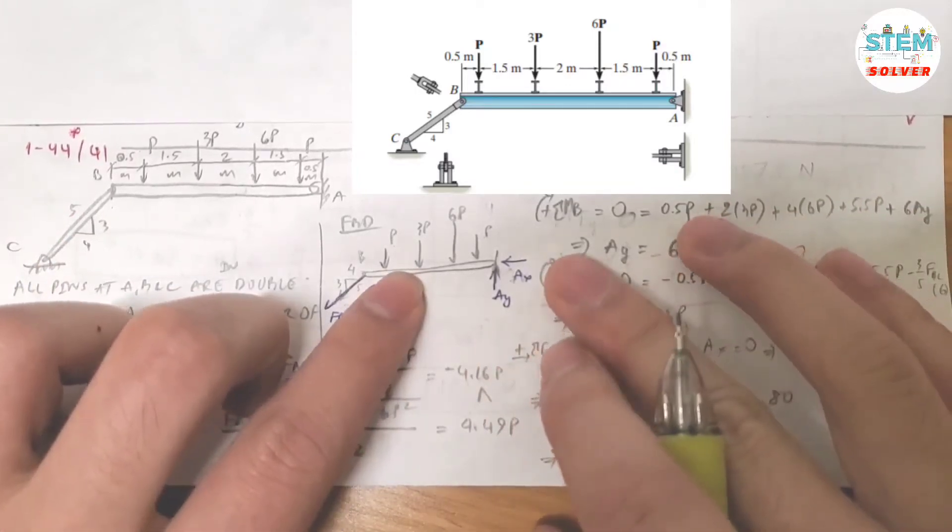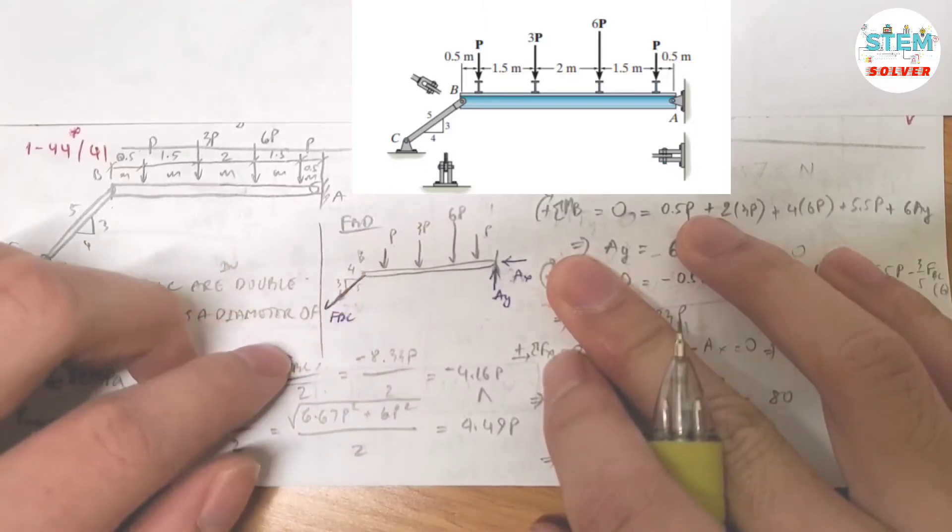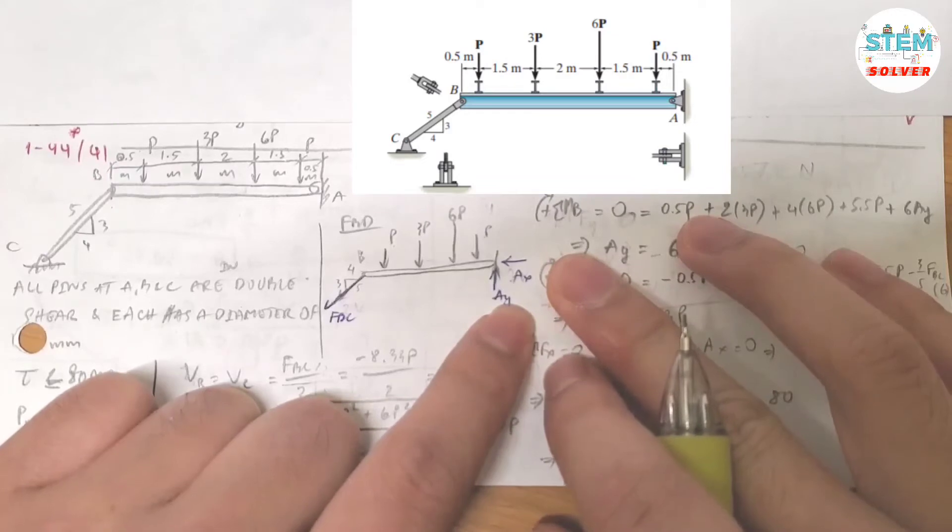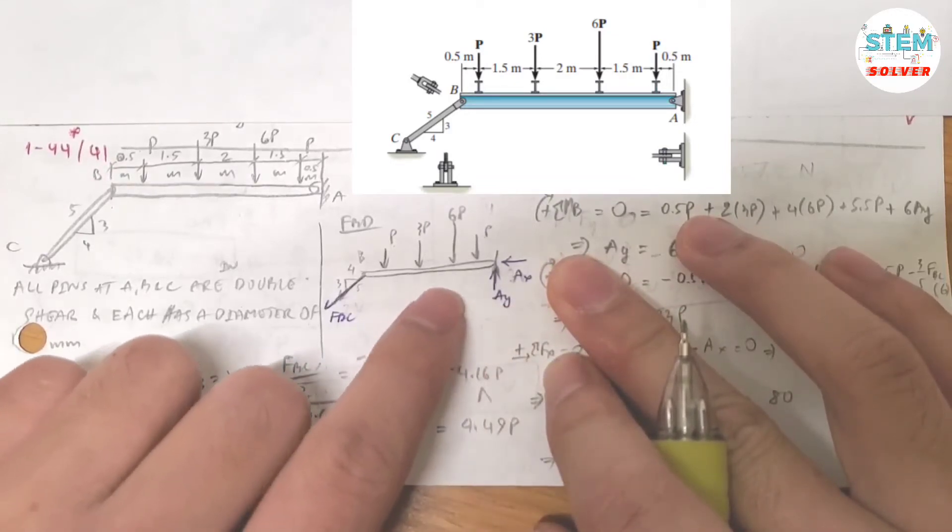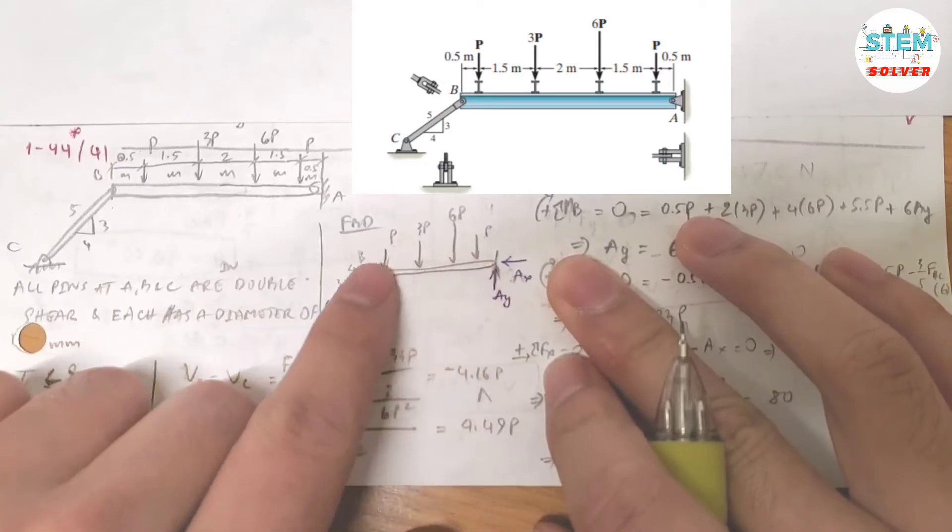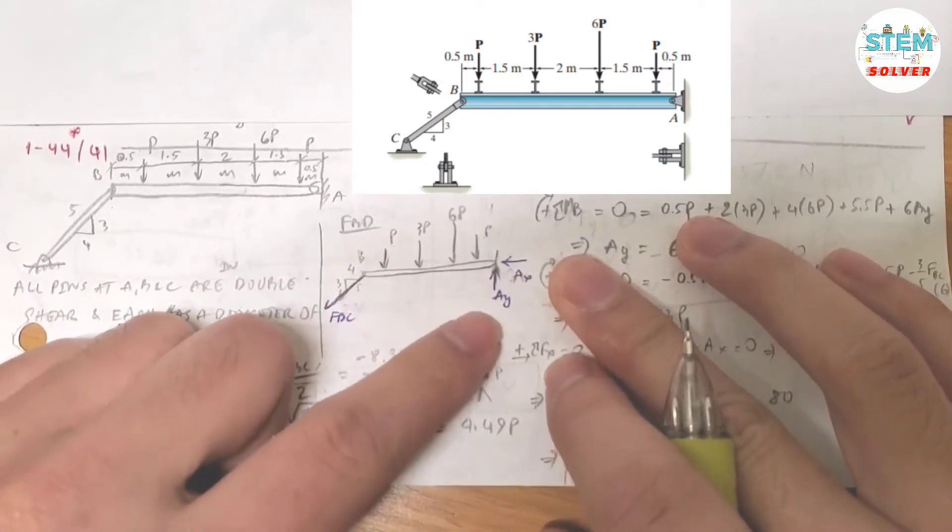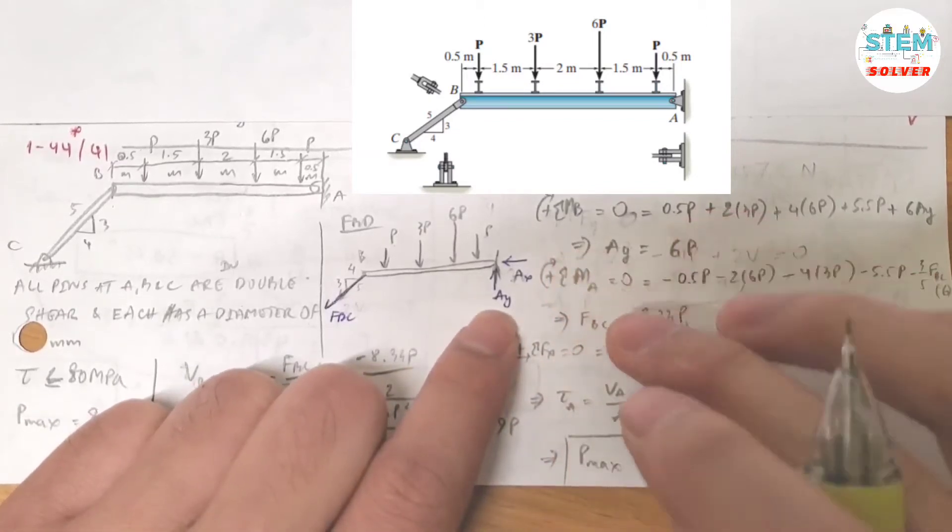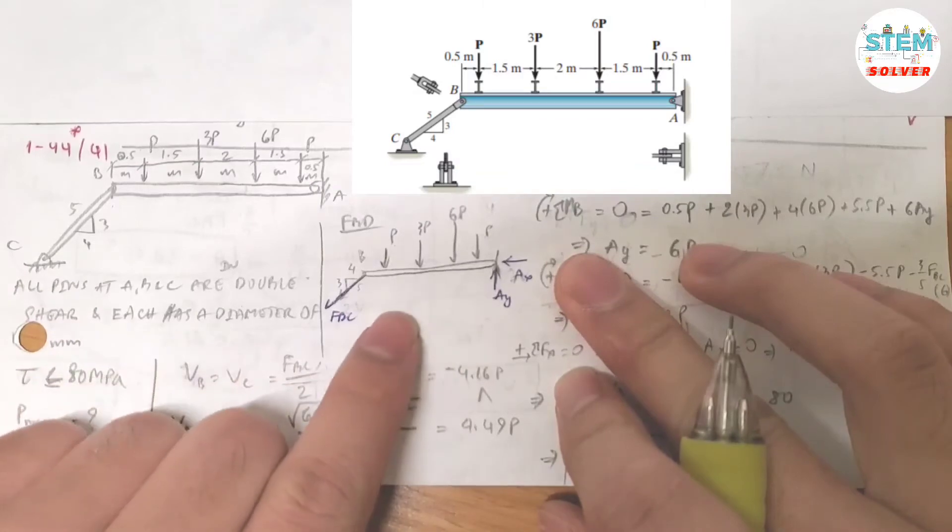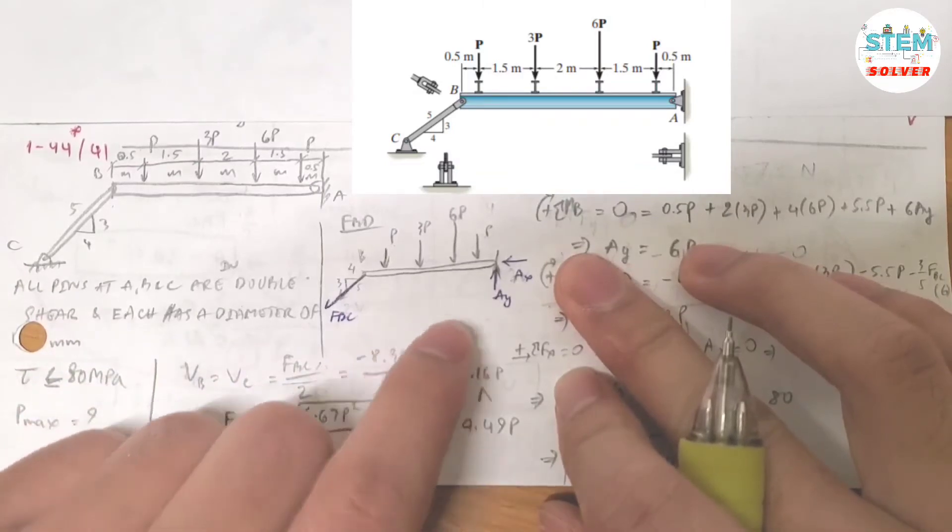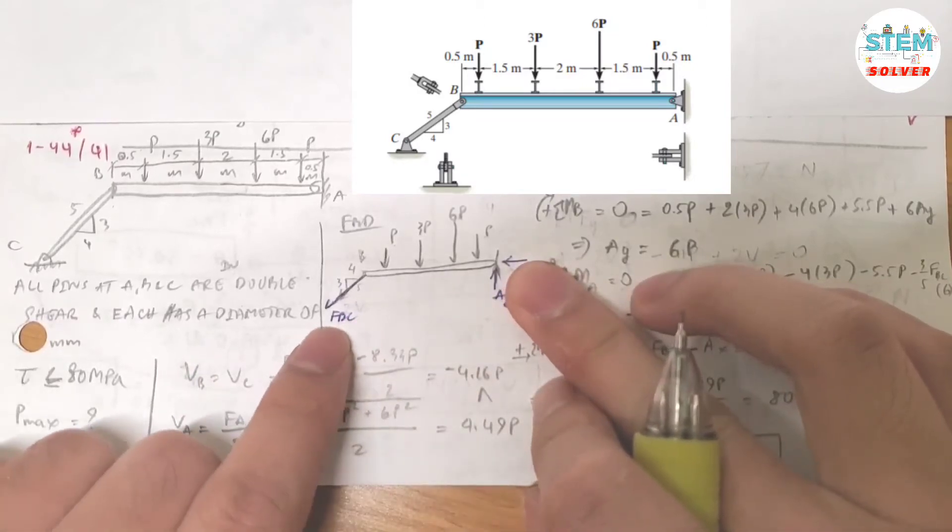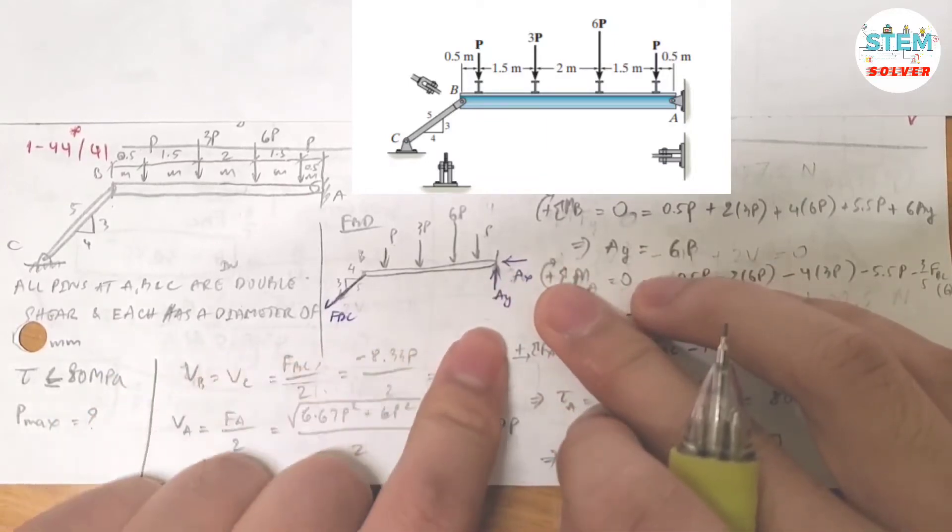Now focus on this one. To find the maximum force, you need to know this force and this force. So how are you going to find the forces in the Y direction? Because all of the P forces are in the Y direction, you need to find force BC and force AY. What I'm going to do is take a moment about A because it eliminates this force and this force, and then I can find FBC in the Y direction right away.